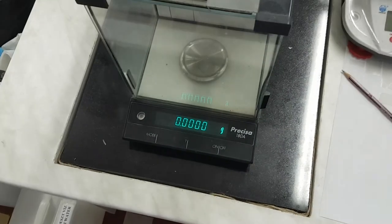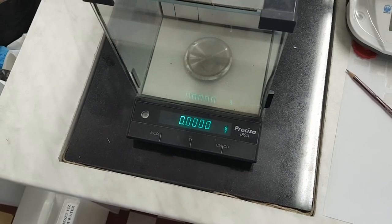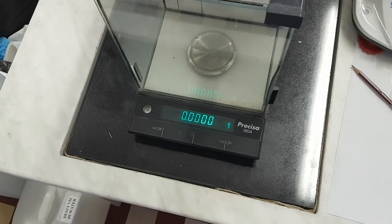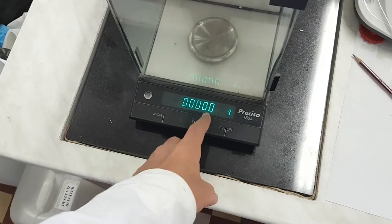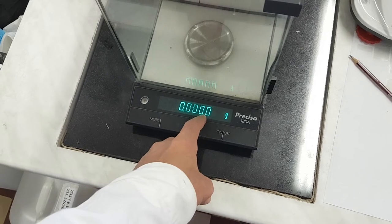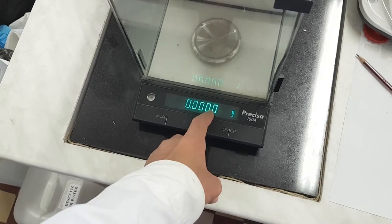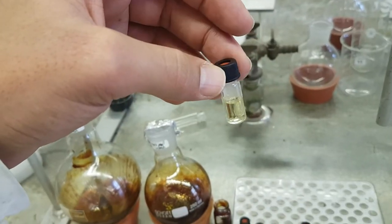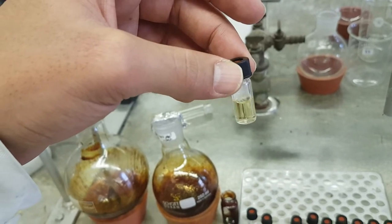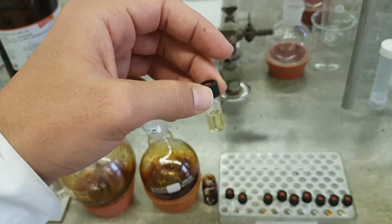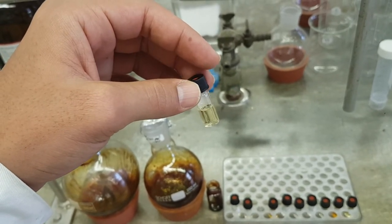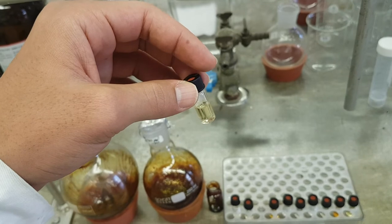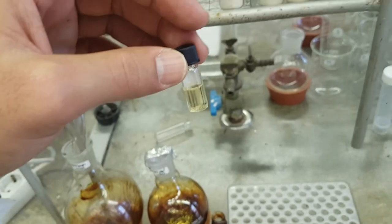You need a balance of high precision, yes, because you will weigh only one milligram, just here, one to one point five. This is the sample or the vial that we will put inside the auto sampler.